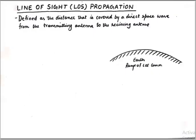We define line of sight propagation as the distance that is covered by a direct space wave from the transmitting antenna to the receiving antenna.